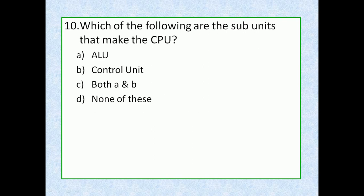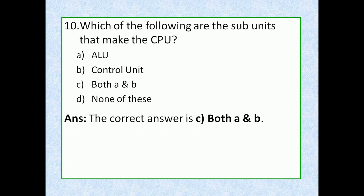Question 10: Which of the following are the subunits that make up the CPU? Option A: ALU, option B: control unit, option C: both A and B, option D: none of these. The correct answer is option C, both A and B. The CPU is made up of two main subunits: the ALU and the control unit. The ALU performs arithmetic and logical operations on data, while the control unit manages the flow of data and instructions within the CPU and between the CPU and other components of the computer.